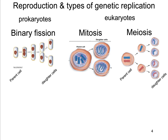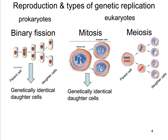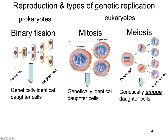We also talked about how in the case of binary fission and mitosis, the daughter cells that are produced are genetically identical — identical to each other and identical to the parent cell. Whereas in meiosis, you get genetically unique daughter cells. What you're typically producing in meiosis are called sex cells or gametes from the parent cell, and they are not genetically identical to the parent cell.